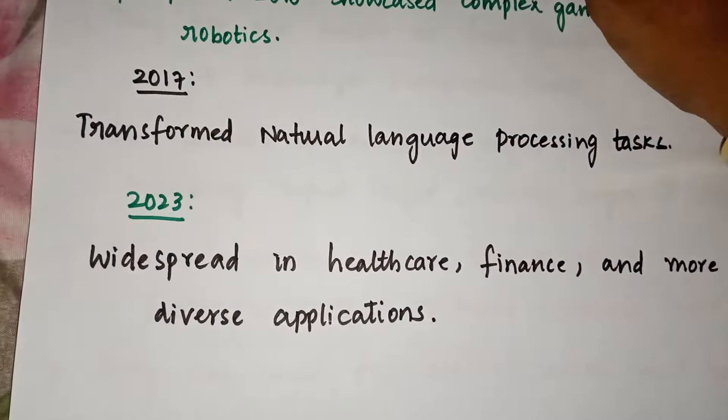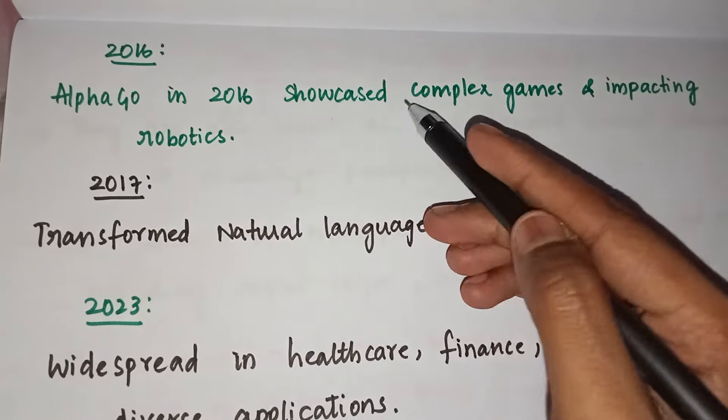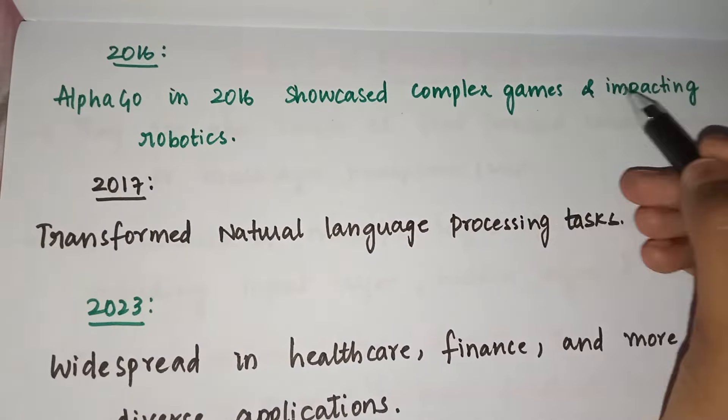Next, in 2016, AlphaGo came, which showcased performance in complex games and had an impact on robotics. Robotics was new at that time, and to impact robotics and games in 2016, AlphaGo came into the picture.